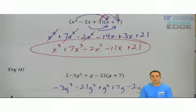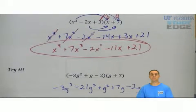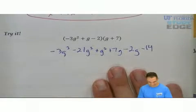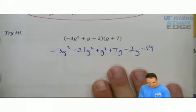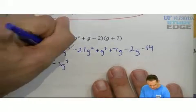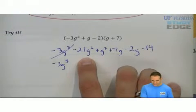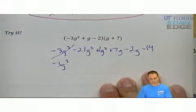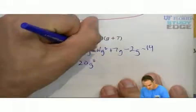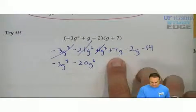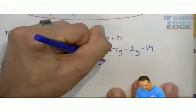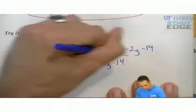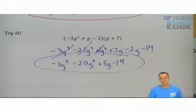Highest power to lowest power and combine like terms. And make sure you can see the minus 14. Highest term, negative 3g to the third power. Negative 21g squared plus g squared. That'd be plus 1g squared. Would be minus 20g squared. 7g minus 2g is 5g minus 14. So there we go.